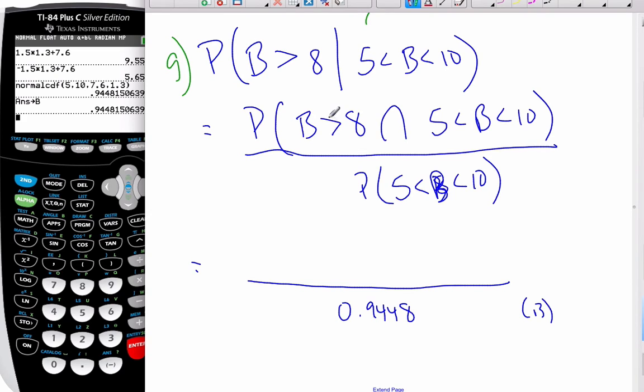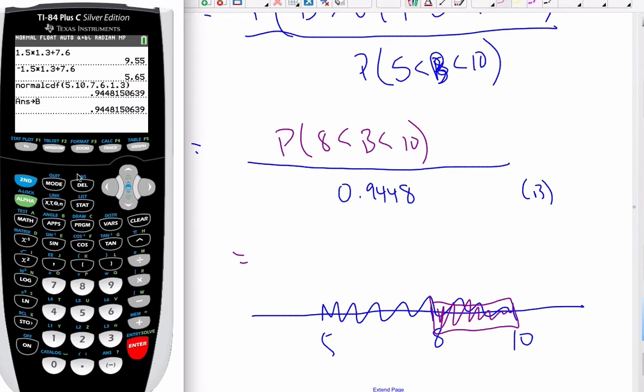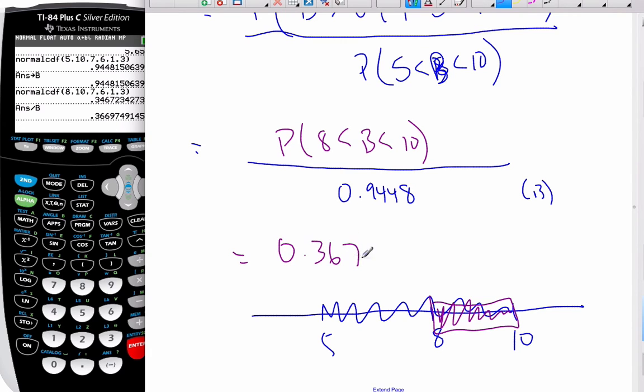I have to think about this. I want the intersection of over 8 and between 5 and 10. If I have my number line with 5, 8, and 10, the intersection is all the numbers between 8 and 10. So it's the probability of between 8 and 10. I go to my calculator, change the 5 to an 8, and that's 0.3467. Divide that answer by my alpha B, and I get the probability of 0.367 as my conditional probability.